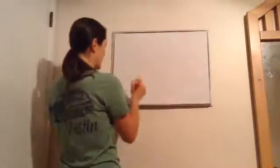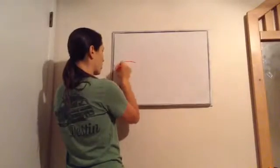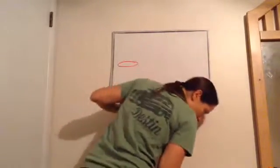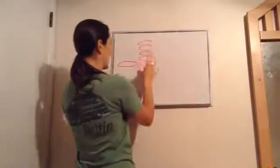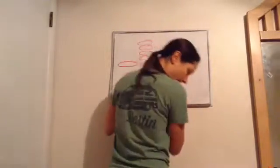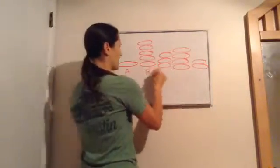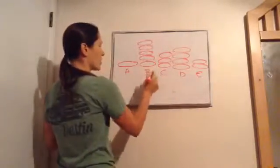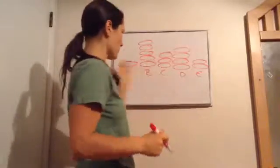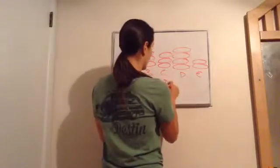Now we're going to switch gears and move to averaging. The best way to explain this: let's say we had five people over for breakfast and I started putting pancakes on people's plates. I'm just going to stack the pancakes. Let's name them A, B, C, D, and E — that makes it easier. That's how I stacked their pancakes.